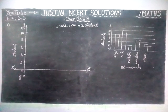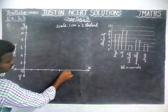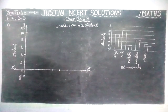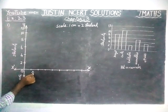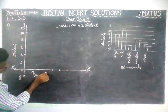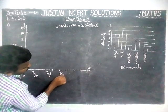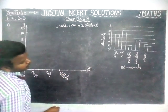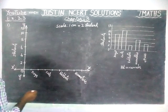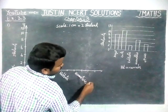In the x-axis we are going to take pet animals — 5 pet animals in total. We are going to write them here: first one is dogs, second one is cat, then rabbit, then hamsters, and this is others.